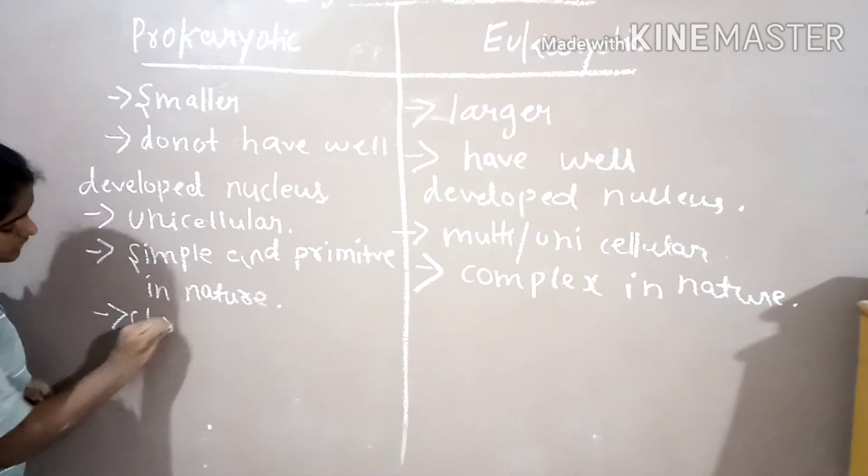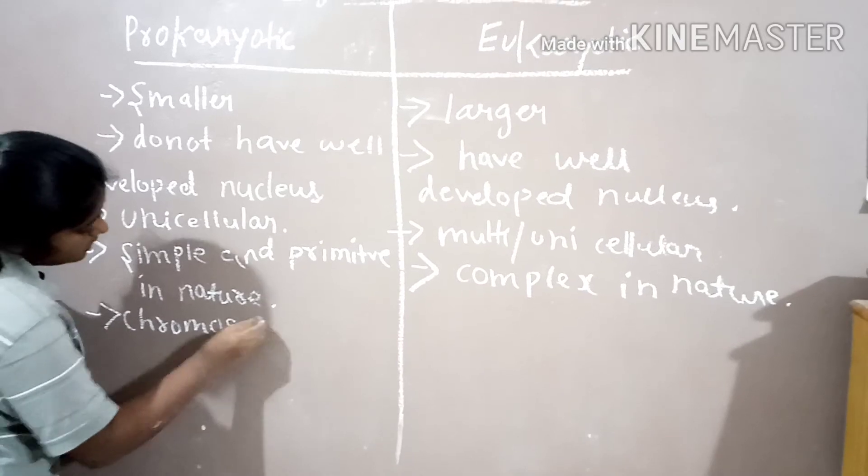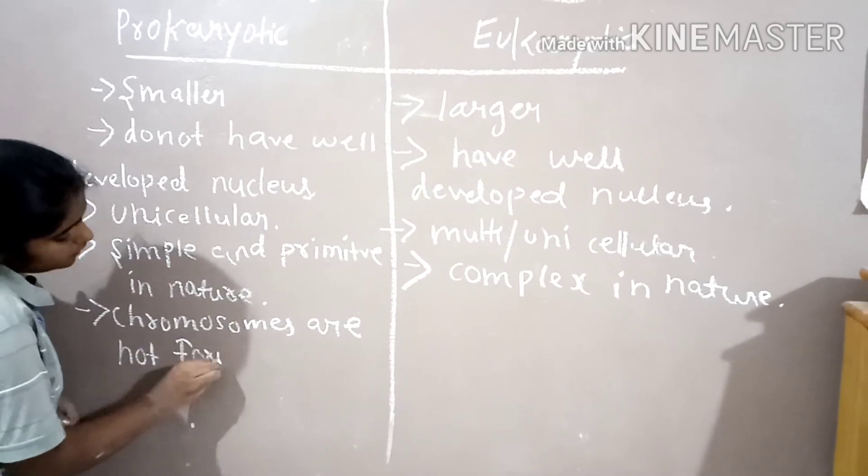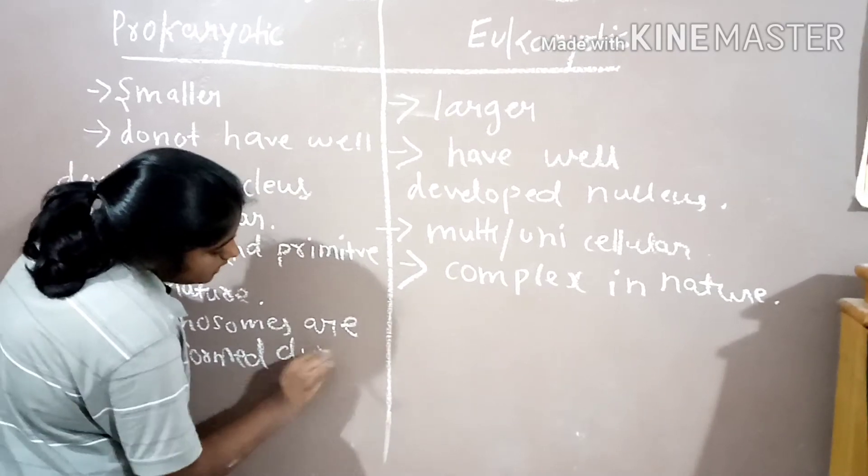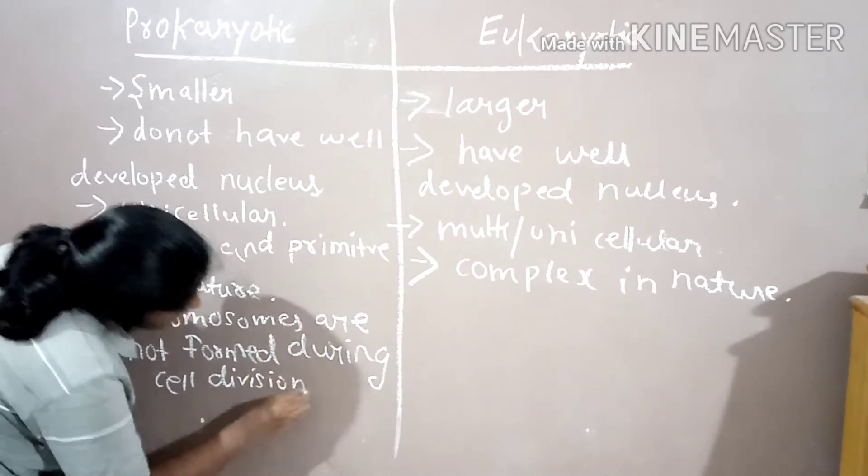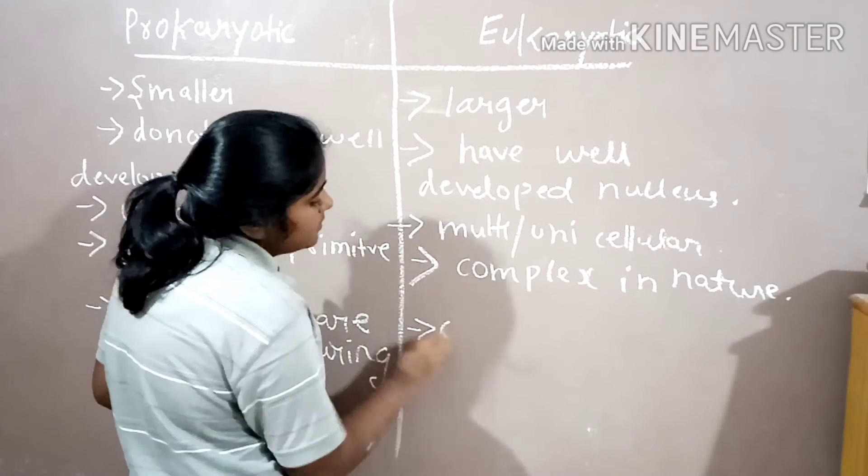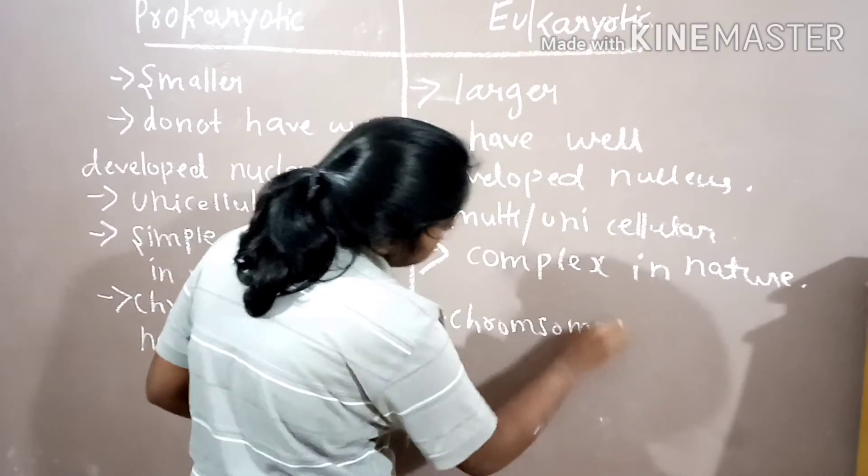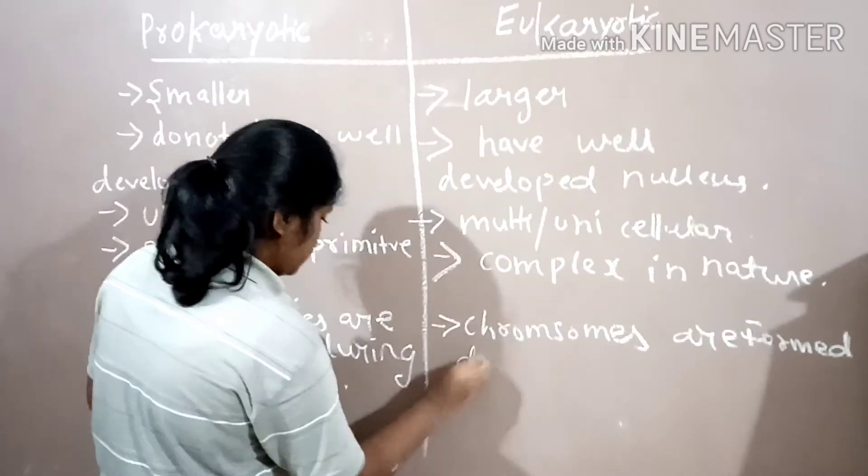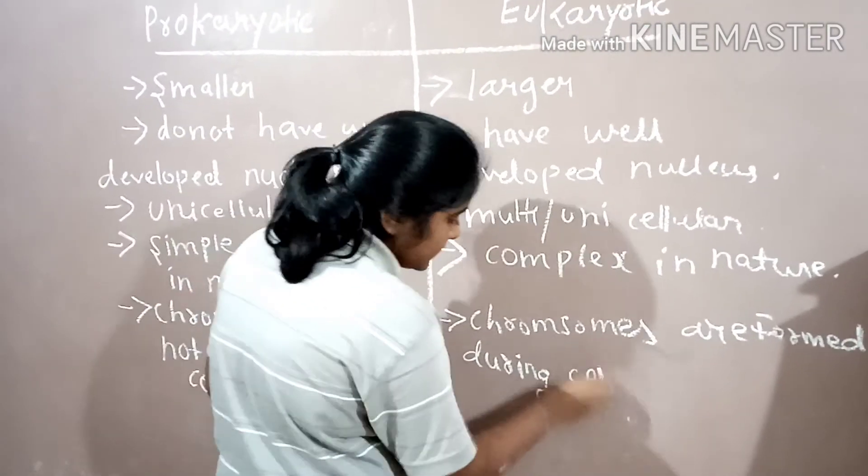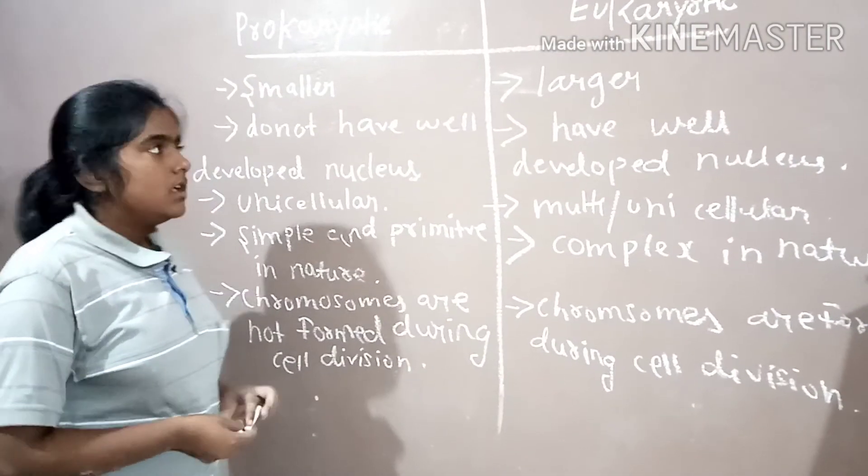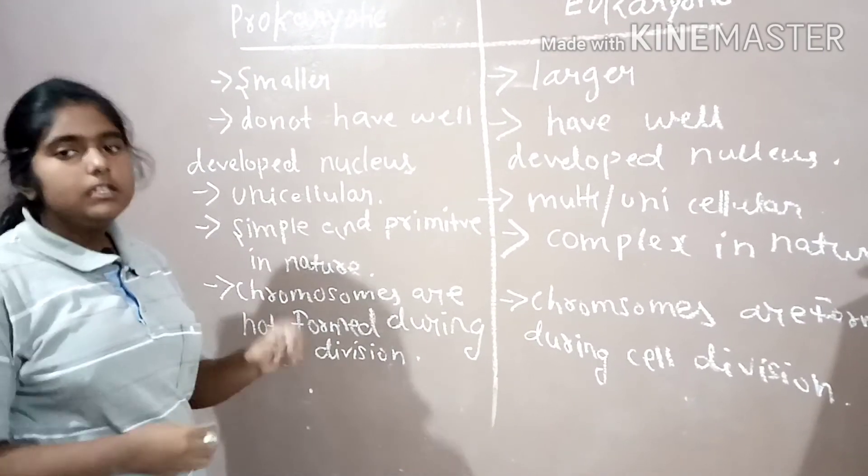Chromosomes are not formed during cell division in prokaryotic cells. Chromosomes are formed during cell division in eukaryotic cells. So this is the difference between prokaryotic and eukaryotic cells.